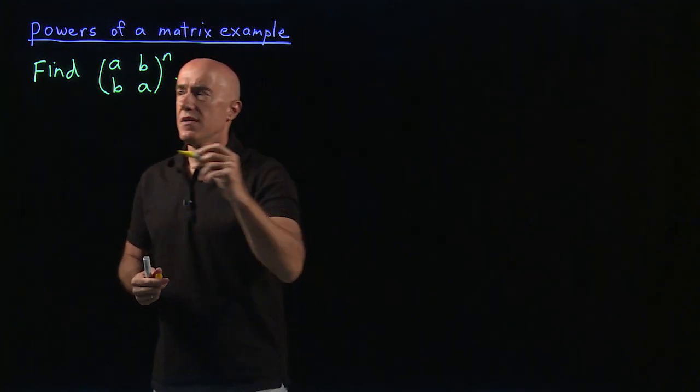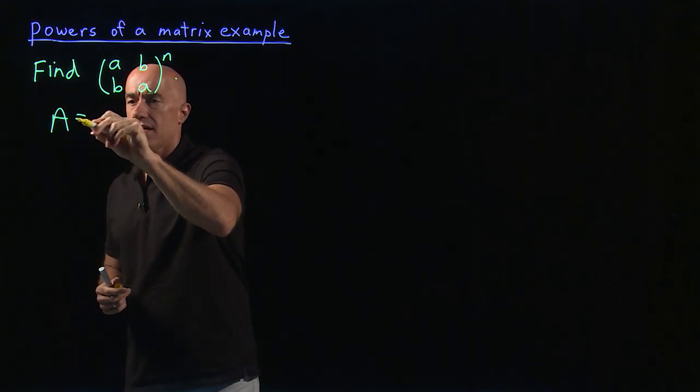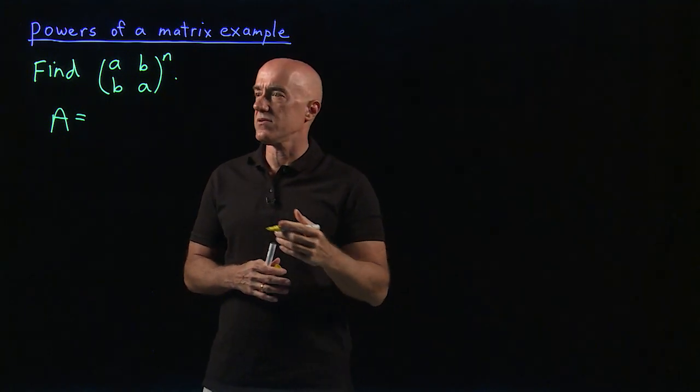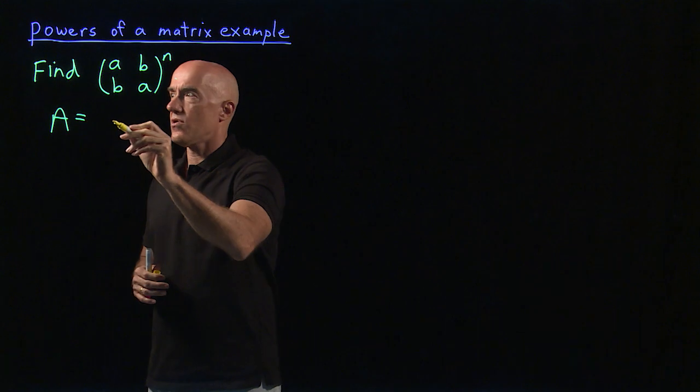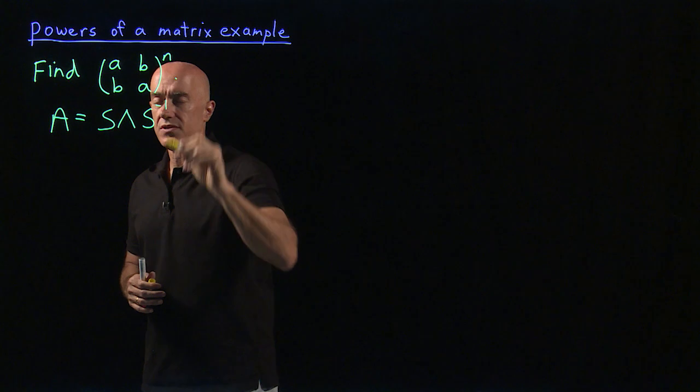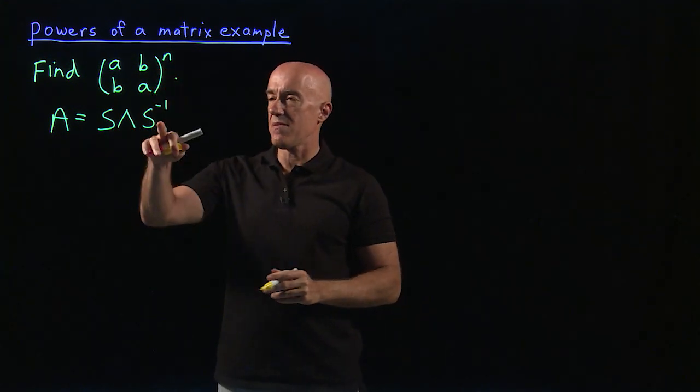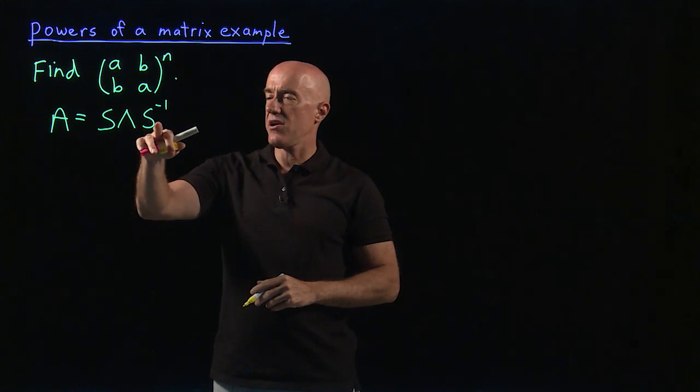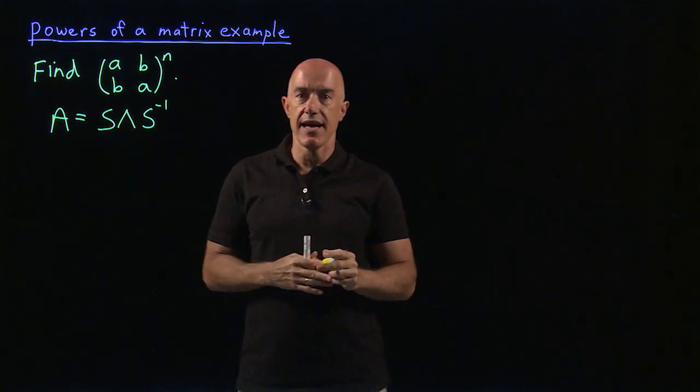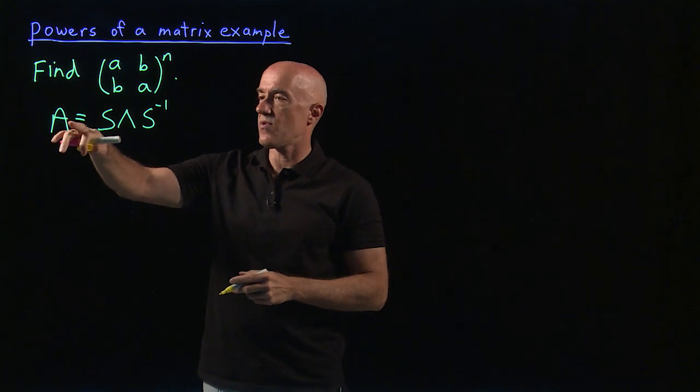So we're using the idea that a matrix that has N linearly independent eigenvectors can be diagonalized. So it's diagonalized as S lambda S inverse. The lambda is the diagonal matrix. Remember S inverse goes on the right here because if we multiply on the right by S, the left will be A times S. S is the matrix of eigenvectors, always has to be on the right side of A.